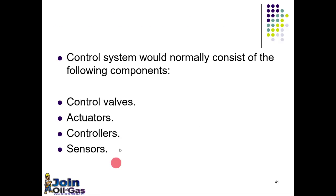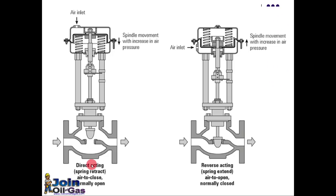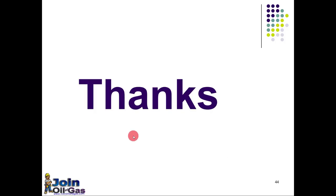Now let's see control valves. Control valves normally consist of the following components: one control valve, one actuator, one controller, and a sensor. Here you can see the globe valve with the valve actuator on top. That's all for today. Thank you and see you soon with another video. Be safe, enjoy, and bye bye.